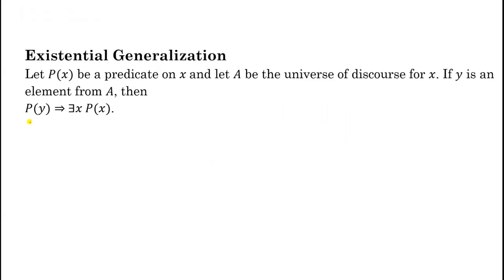Existential Generalization: P(x) is a predicate on x and A is the universe of discourse. If P is true for y, and y is an element of A, then P is true for some element of A, so we can write 'there exists x, P(x).' There is no need to check whether y is arbitrary — we simply know P is true for this particular element y, and therefore we can generalize to 'there exists x, P(x).'